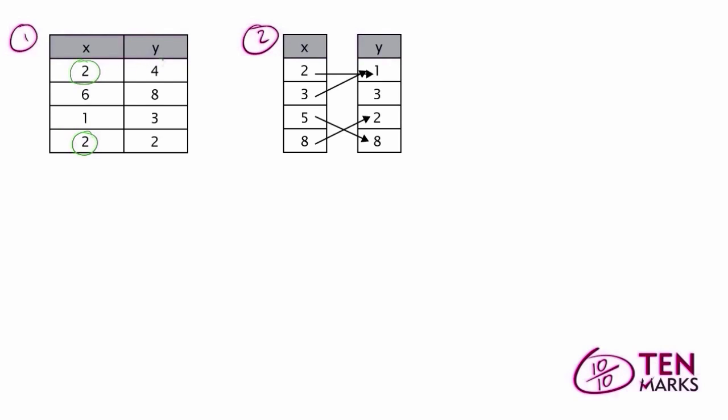Something to notice here is that I see the x value 2 listed twice. More importantly, when the x value 2 is listed twice, it has two different y values. Remember, for a relation to be a function, each input value must correspond to a unique output value. Because 2 corresponds to 4 and 2 also corresponds to 2, this is not a function.